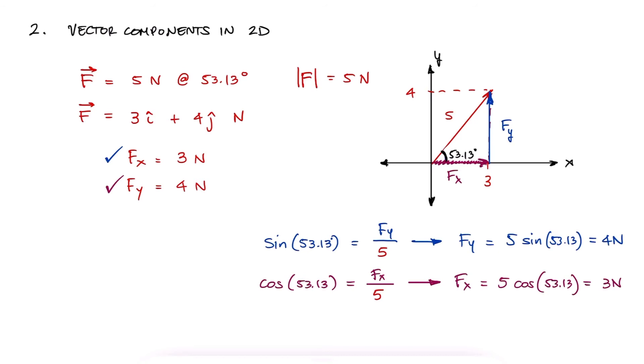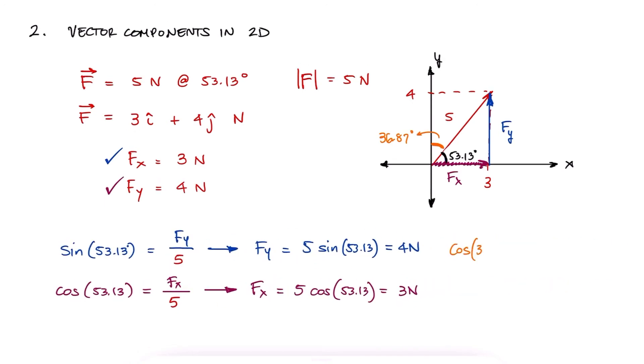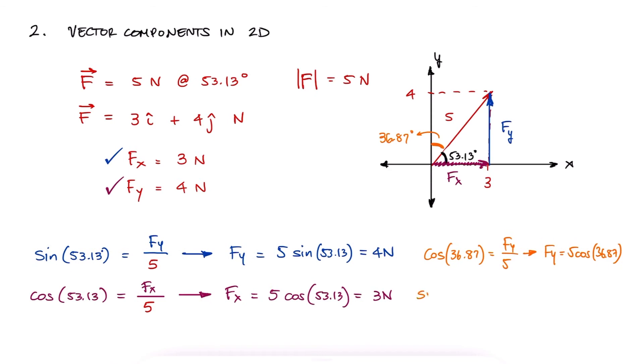Now I say in this case because sine is not necessarily the y component and cosine the x component. If we had been given the complementary angle 36.87, then fy would be f cosine of 36.87, and fx would be f sine of 36.87. Notice that in the first case I used sine for y, and in the second sine for x.